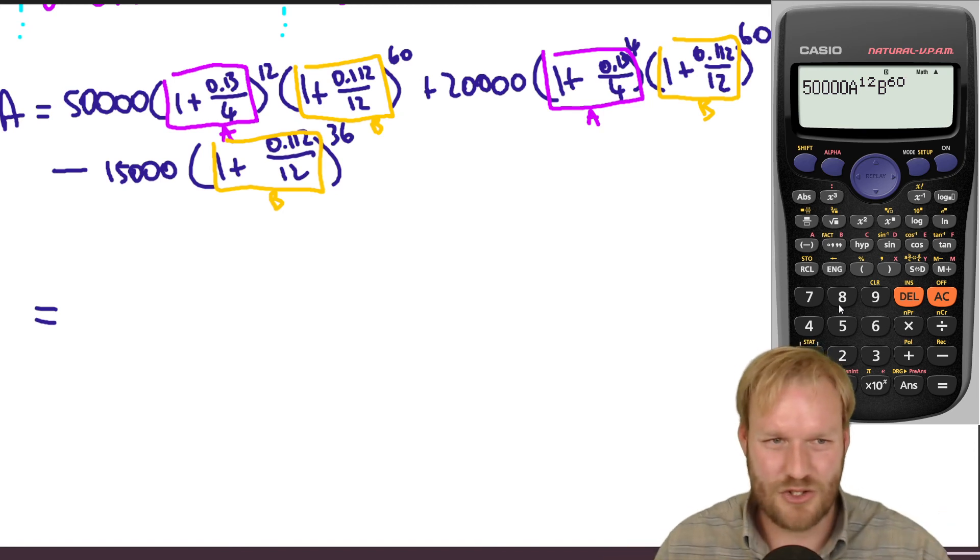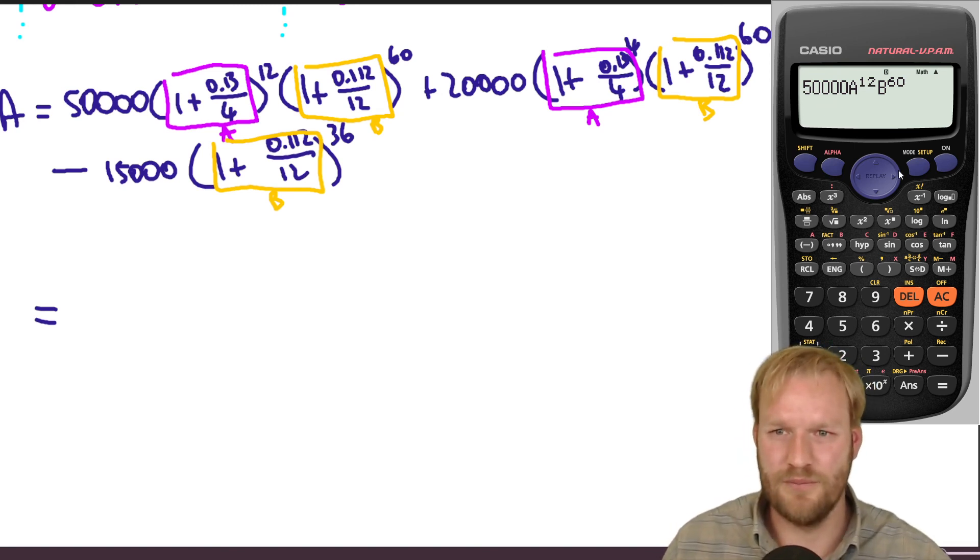So if something looks a bit strange, I can go back and go 50,000. Oh yeah, I wrote 500,000 by mistake or 5000. I'd made a mistake with those. It's just going to be less likely to make errors. 20,000 times A to the power of four, A to the power of four, and B to the power of 60 again, alpha B to the power of 60. And we're going to subtract 15,000. Now that was just B, so B to the power of 36. And in it goes, and hopefully...